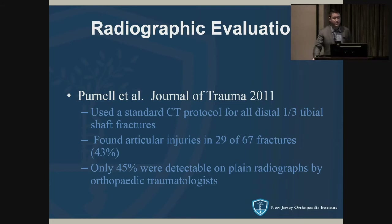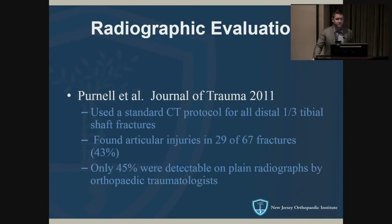A JOT study looked at all distal one-third tibia shaft fractures. They found that 43% of these spiral distal tibia fractures had articular injuries, and less than half of them were actually identified on plain films by traumatologists. Their take-home was: if it's a spiral fracture and you suspect intraarticular extension, get a CT scan — it's probably not a bad idea before you send a nail down.